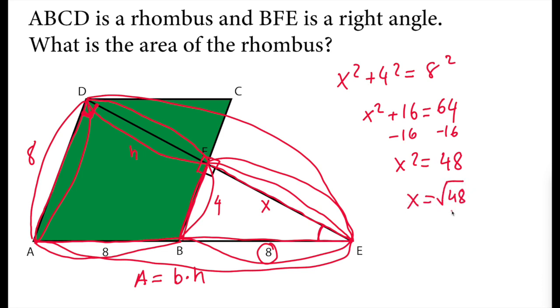If we simplify this, we can factor this as 16 times 3. So we can get 16 out of the square root as 4 times square root of 3. X is 4 times square root of 3.